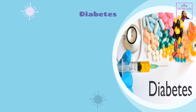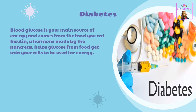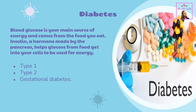Diabetes is a disease that occurs when your blood glucose, also called blood sugar, is too high. Blood glucose is your main source of energy and comes from the food you eat. Insulin, a hormone made by the pancreas, helps glucose from food get into your cells to be used for energy. The most common types of diabetes are Type 1, Type 2, and gestational diabetes.